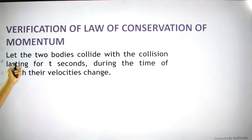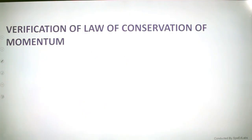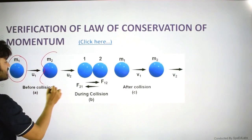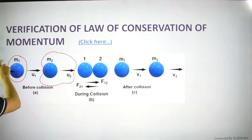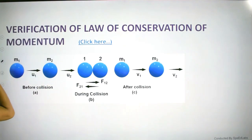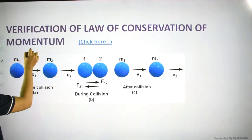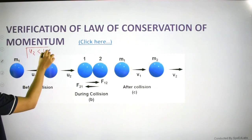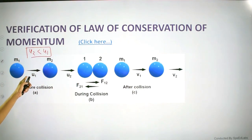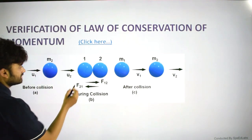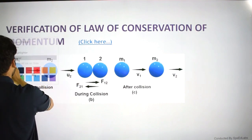Now consider two bodies colliding with each other, with the collision lasting 40 seconds. Their velocities will change. Body m1 is moving with initial velocity u1, and body m2 is moving with initial velocity u2. When u2 is less than u1, the bodies will collide because m1 is faster.